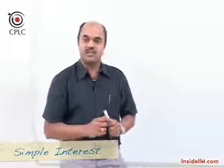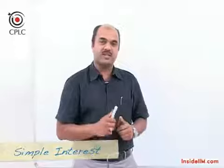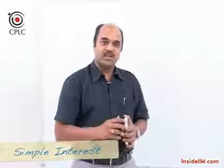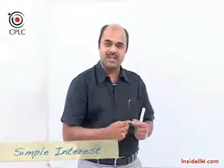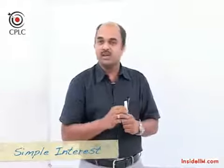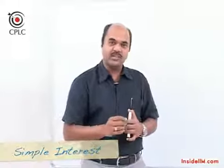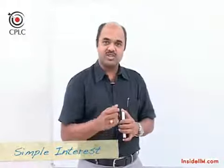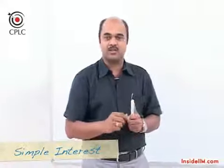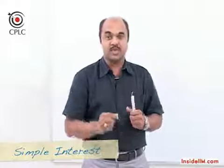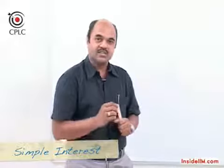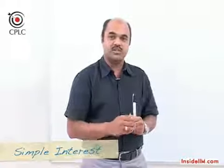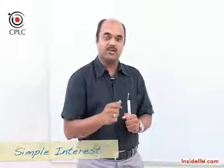There are two kinds of interest: simple interest and compound interest. The basic difference is that in simple interest the principal does not change — the initial money invested or borrowed stays constant over the entire time duration. In compound interest, the principal keeps changing because the interest is regularly added back to the principal. So in simple interest the principal remains the same throughout, whereas in compound interest the principal changes regularly.